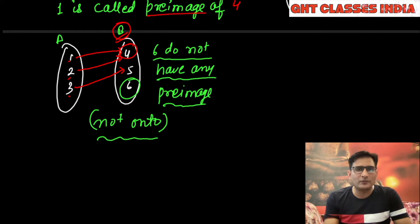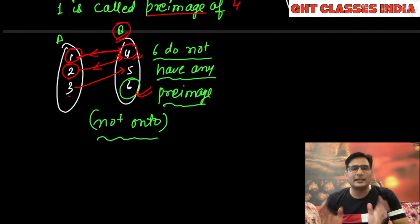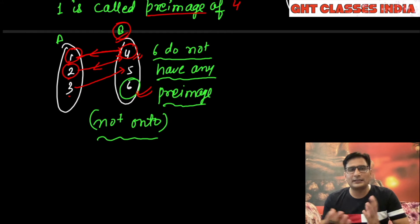Look at element 4 here. Element 4 has two pre-images: 1 and 2. But element 6 has no arrow coming to it — it is broken, meaning 6 has no pre-image. So all the wedding guests didn't get food. When any element of set B does not have a pre-image, the function is not onto.